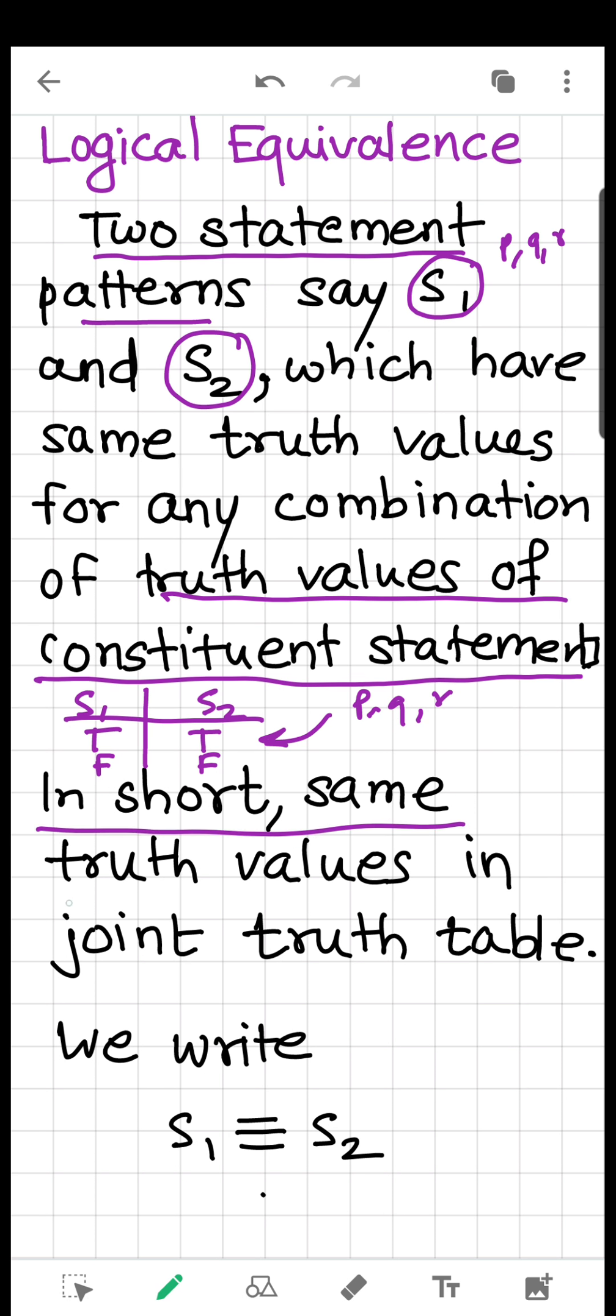In short, same truth values in joint truth table. We have made S1 and S2 joint truth table. So in this case, we say that the two statement patterns S1 and S2 are logically equivalent, and we write S1 is equivalent to S2. This is the equivalence symbol. Logically, when both statements always show same truth value for any given combination of its constituent statements, they have logically the same meaning. And that's why we say they are logically equivalent.